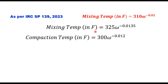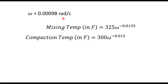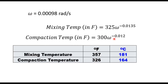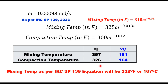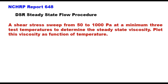For the example data shown, the frequency corresponding to a phase angle of 86° is 0.000 radians per second. Substituting this value into the equations gives a mixing temperature of 181°C and a compaction temperature of 164°C. That is how the phase angle procedure is used to determine mixing and compaction temperature.